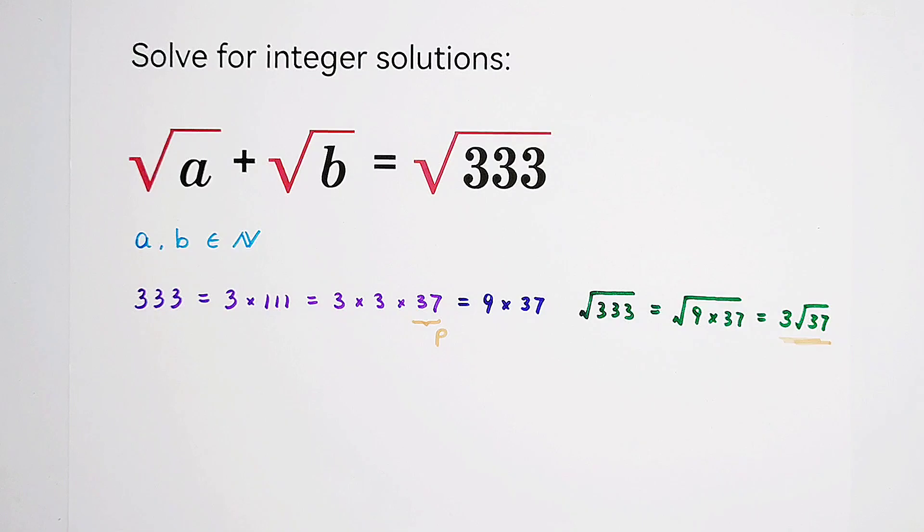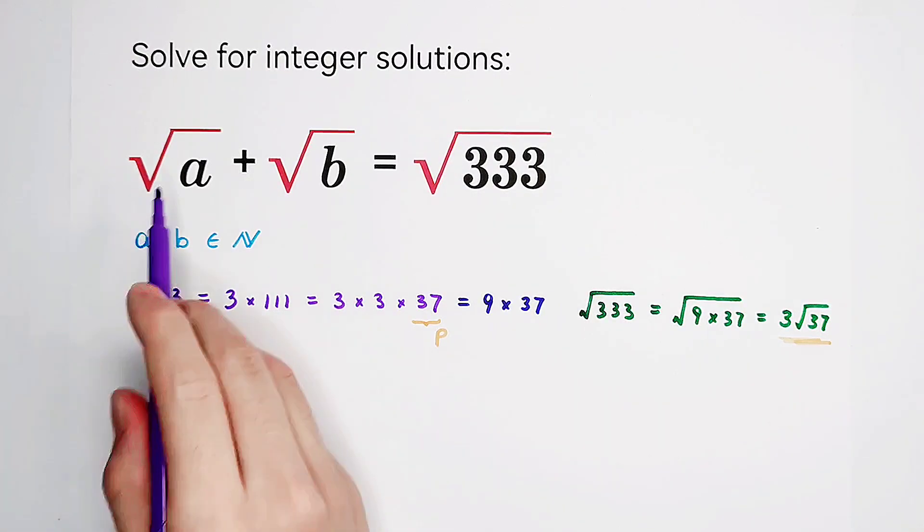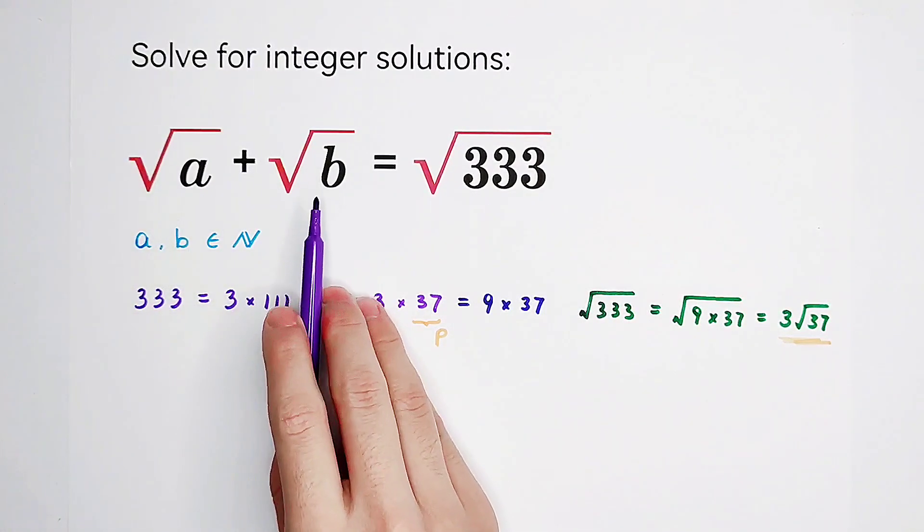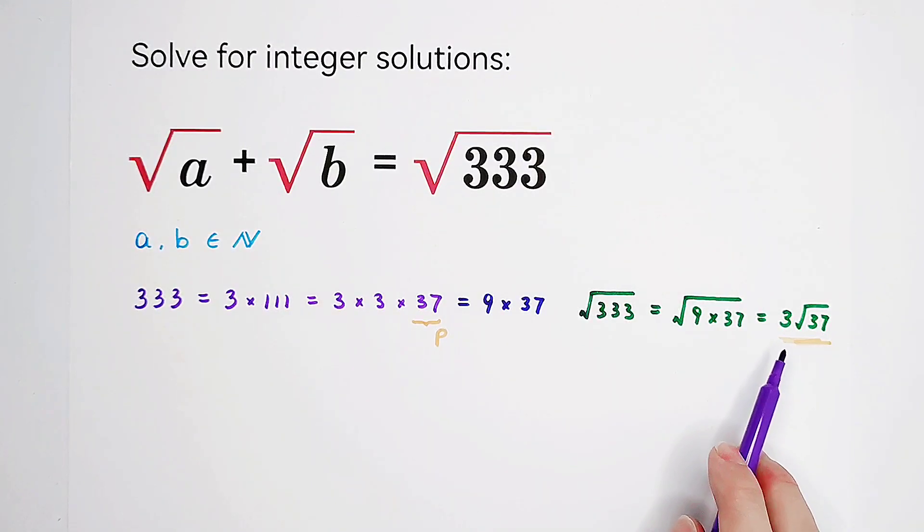So now, what does it mean? That means, square root of a plus square root of b equals 3 times square root of 37.